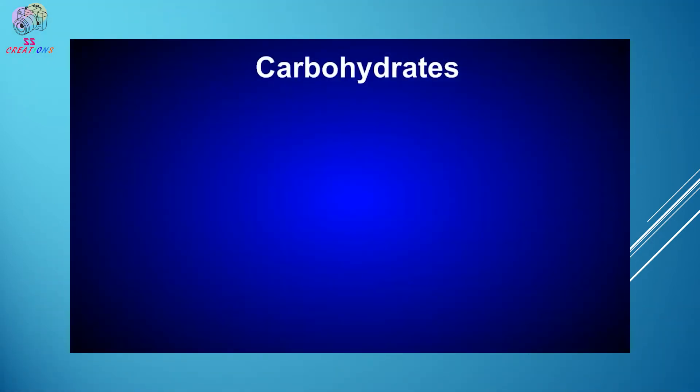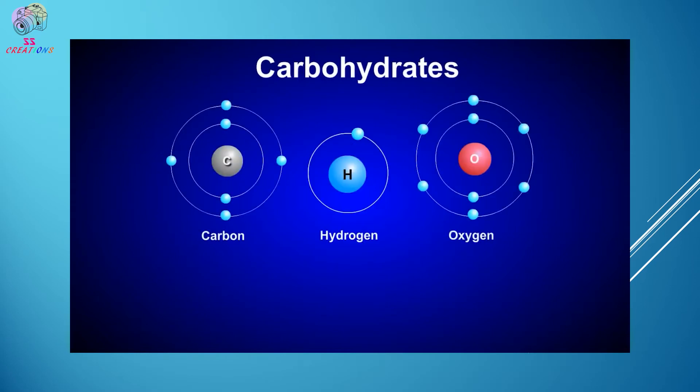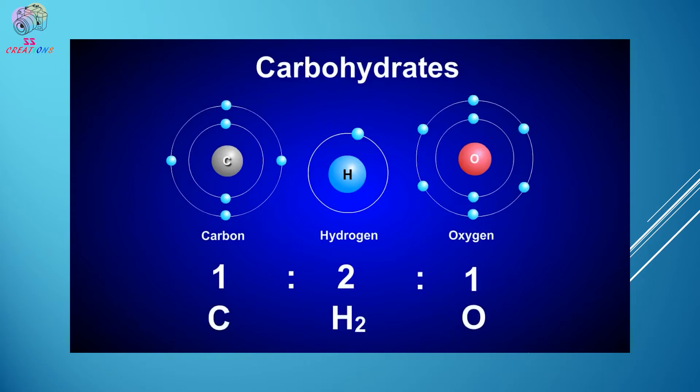Carbohydrates are biomolecules composed of carbon, hydrogen, and oxygen atoms in the ratio 1:2:1. We can represent the proportion of these elements within carbohydrate molecules with the formula CH₂O. Common sources of naturally occurring carbohydrates include fruits, vegetables, nuts, seeds, milk, grains, and legumes. So before classifying carbohydrates, let's deal with the types of carbohydrates.